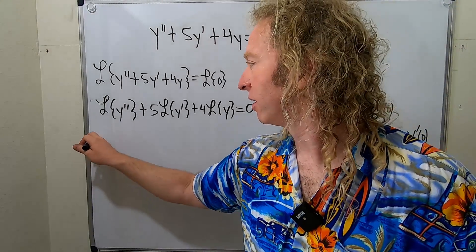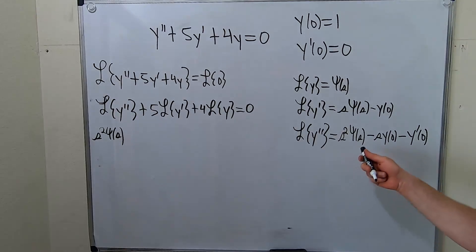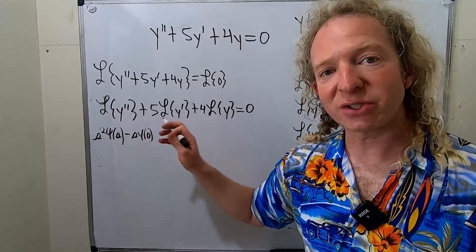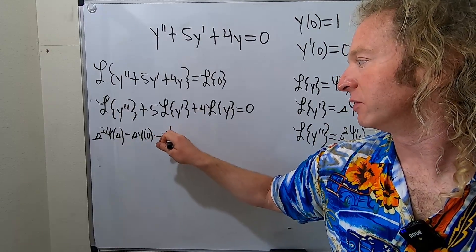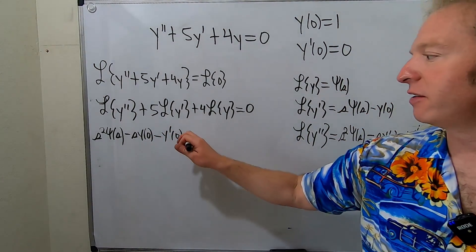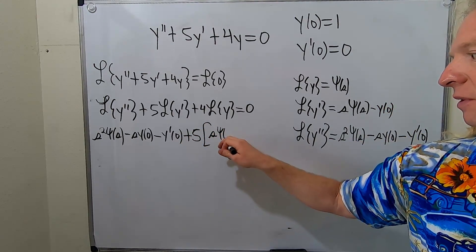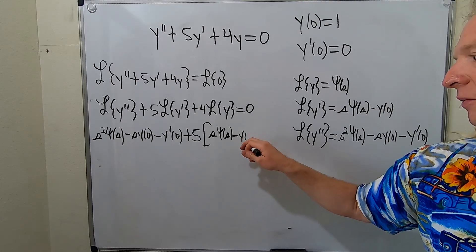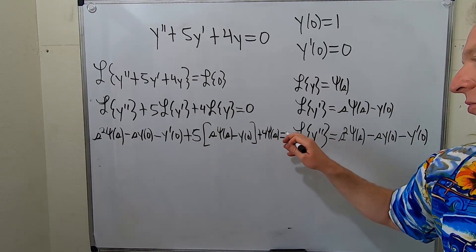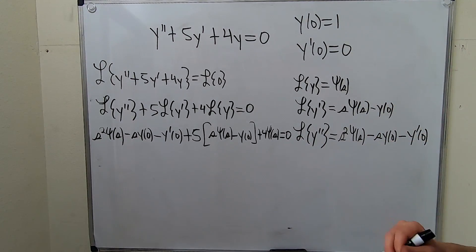Now let's apply these formulas. We have s squared·Y(s) minus s·y(0) minus y prime(0), plus 5 times [s·Y(s) minus y(0)], plus 4·Y(s), and that's equal to 0.